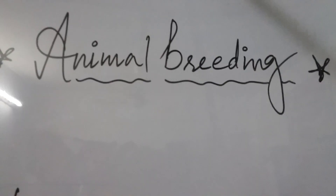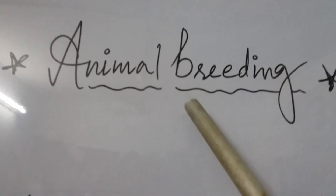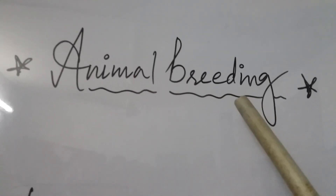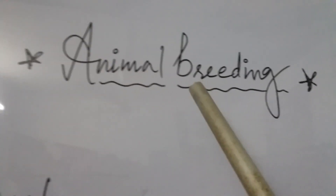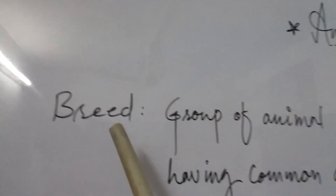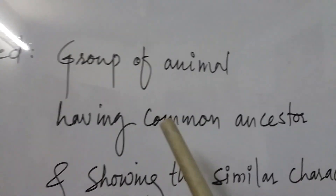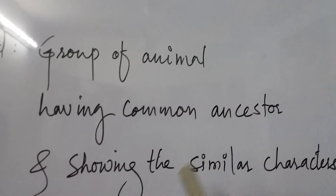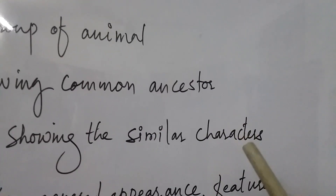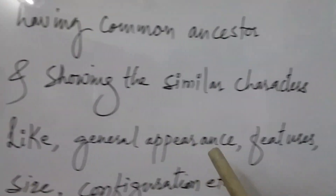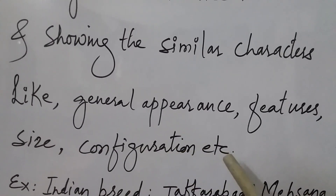To understand animal breeding, one should understand the term 'breed.' A breed is nothing but a group of animals having a common ancestor and showing similar characteristics like general appearance, features, size, and configuration.